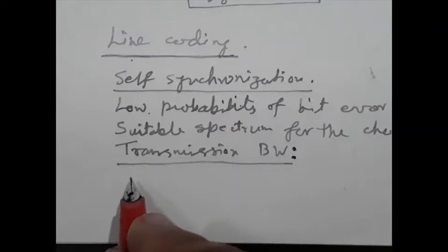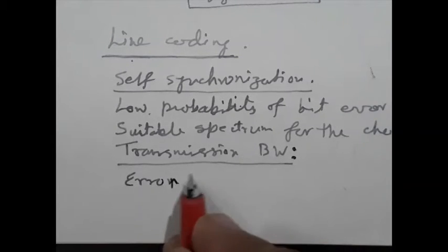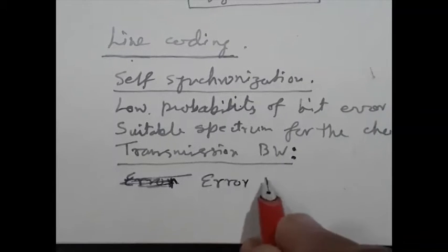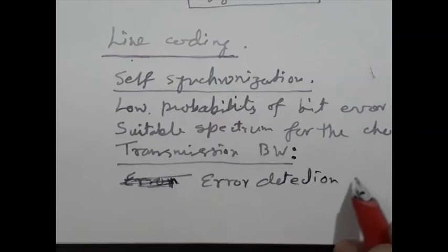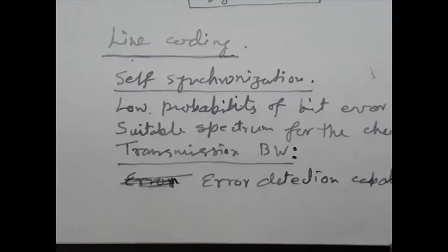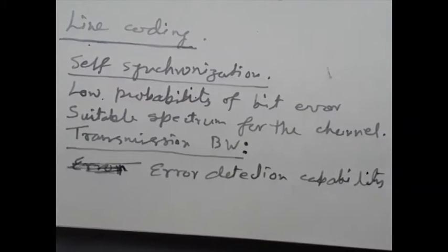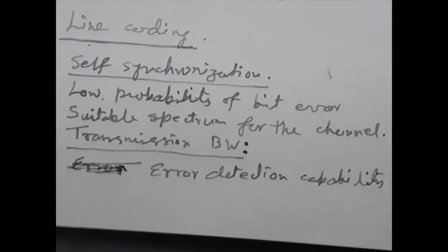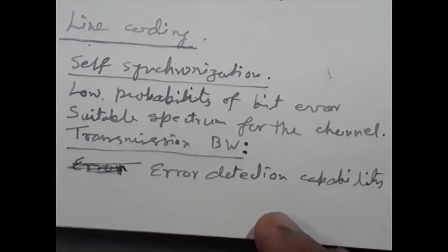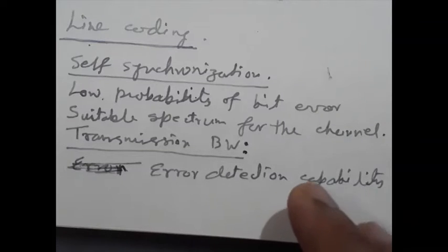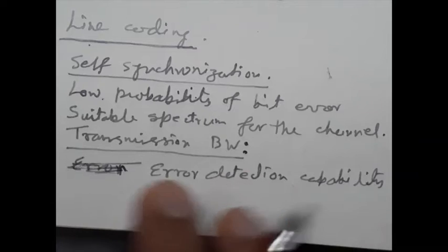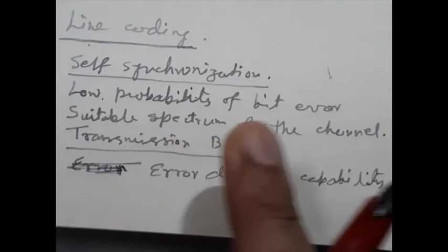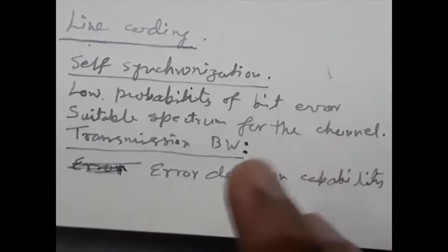Next is error detection capability. It should be possible to implement this feature easily by the addition of channel encoders and decoders, or the feature should be incorporated into the line code itself. For example, in the case of alternate mark inversion, it has a certain amount of error detection capability — if there is some problem in the transmission of logic ones, it can be detected easily.